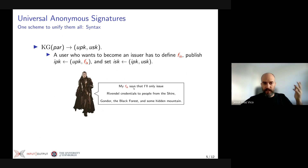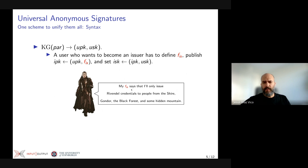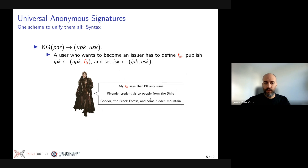For instance, let's say that Elrond wants to host a party but will only allow people in if they come from either Gondor, the Shire, the Black Forest, or some hidden mountain. So he will need to advertise in his issuance function that he only accepts credentials from these places in order to grant a credential, which we will call a Rivendell pass.